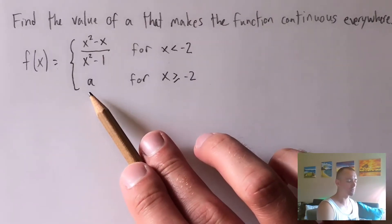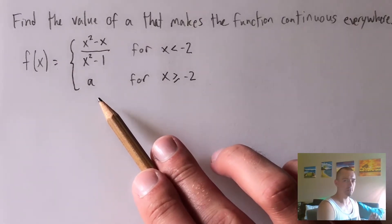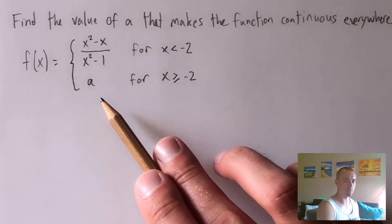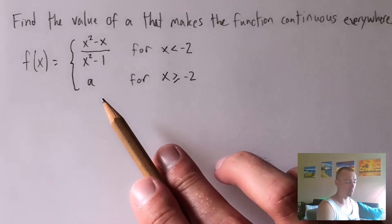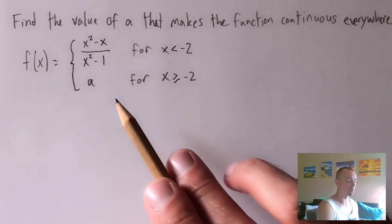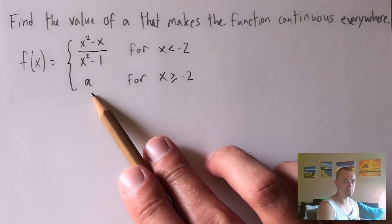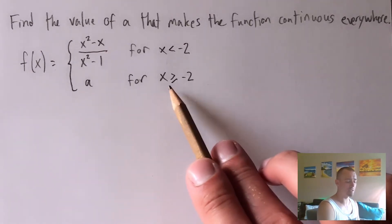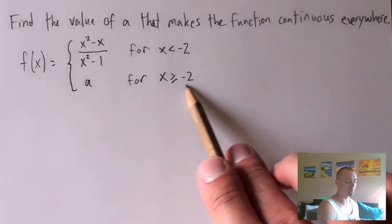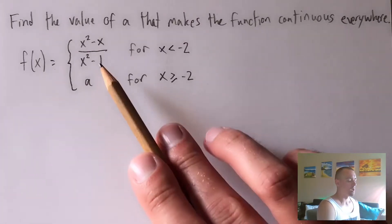We'll start with the most simple piece: the constant function f of X equals A. A constant function is continuous everywhere, so no matter what value we find A to be, this part of our piecewise function is going to be continuous for all X's greater than or equal to negative two.